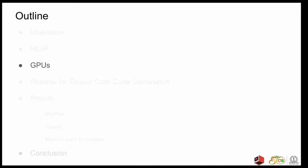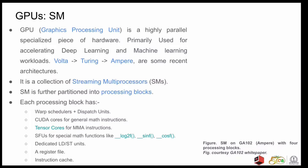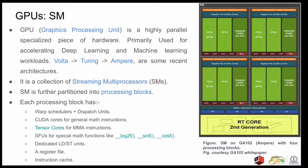Moving on, we will discuss in general about GPUs and Tensor Cores. So GPU stands for Graphics Processing Unit and is a highly parallel specialized piece of hardware and is primarily used for accelerating deep learning and machine learning workloads. GPU is a collection of streaming multiprocessors generally called SMs. Each SM is further partitioned into processing blocks. Each processing block has its own warp scheduler, dispatch unit, CUDA cores, tensor cores, and some special functional units. There is also a dedicated register file, an instruction cache, and a load store unit for each SM also.